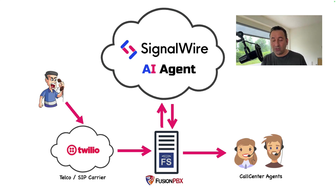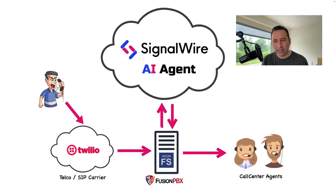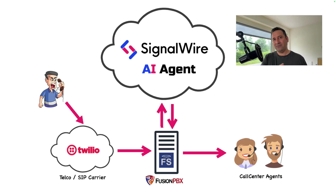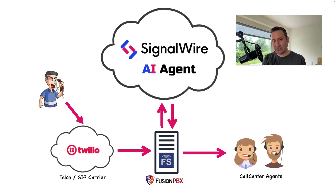Here I'm using Twilio as the SIP carrier — just to show that it doesn't need to be from any specific provider or from SignalWire. It can be your local provider. The call can come from Deutsche Telekom, Telekom Malaysia, or wherever you are, and it will be received in that carrier and sent to your PBX. Your PBX can be on-premise in your office or in the cloud — it doesn't matter.